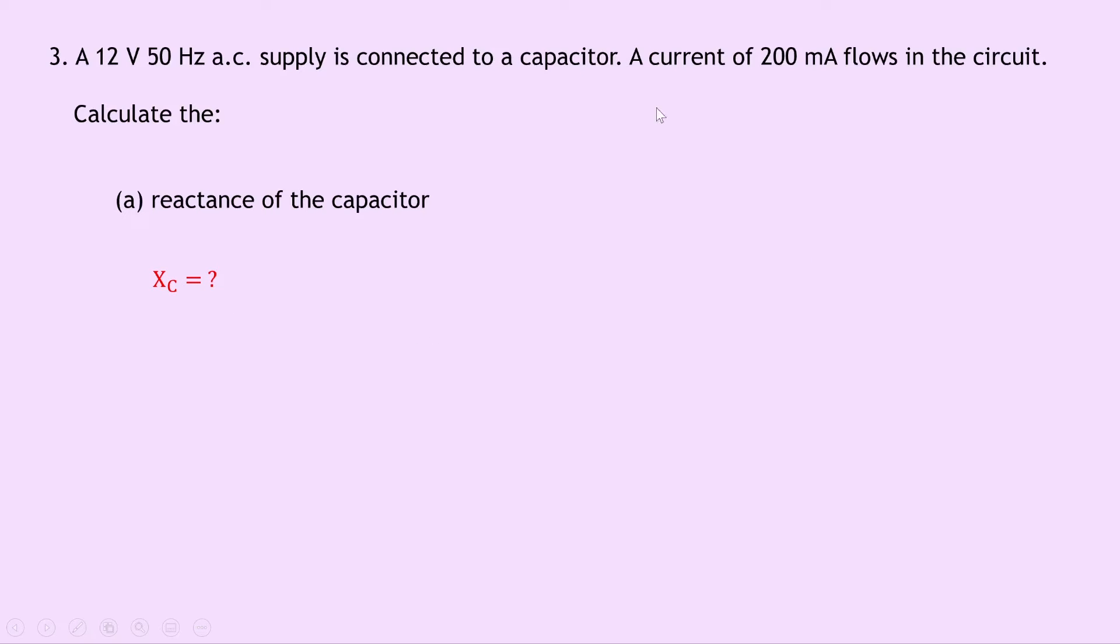We know that the capacitor, when it's fully charged, will have the supply voltage 12 volts across it, so V equals 12 volts, and the current in the capacitor is 200 milliamps, which we can rewrite as 200 times 10 to the minus 3 amps. So writing down our equation for capacitive reactance, we have XC equals V over I. Substituting in the numbers gives us 12 divided by 200 times 10 to the minus 3. And if you put that into your calculator, you should get a final answer of 60 ohms.